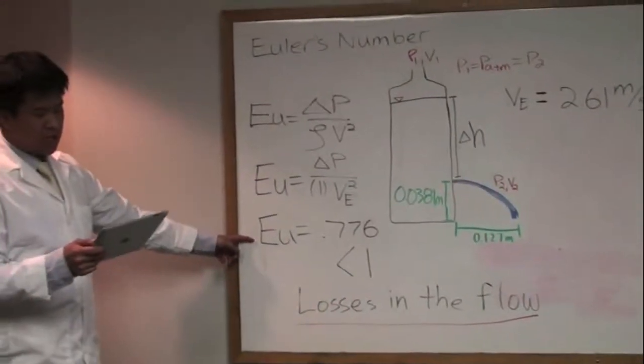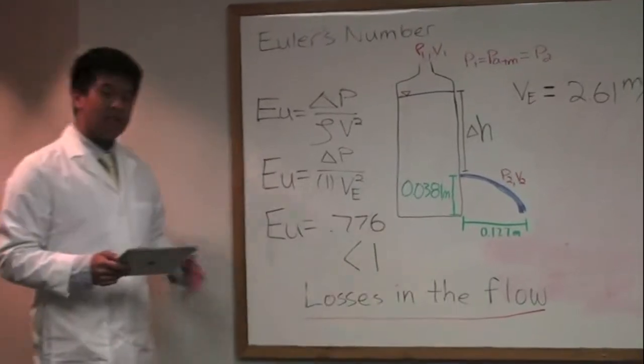This number is less than 1, which indicates losses in the flow. This is the significance of Euler's number.